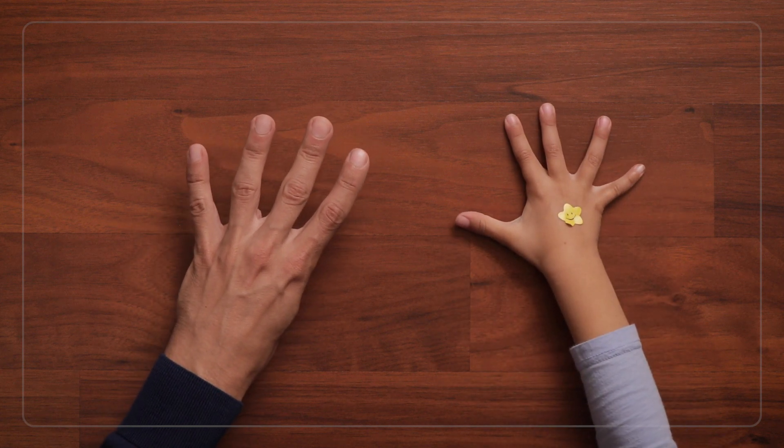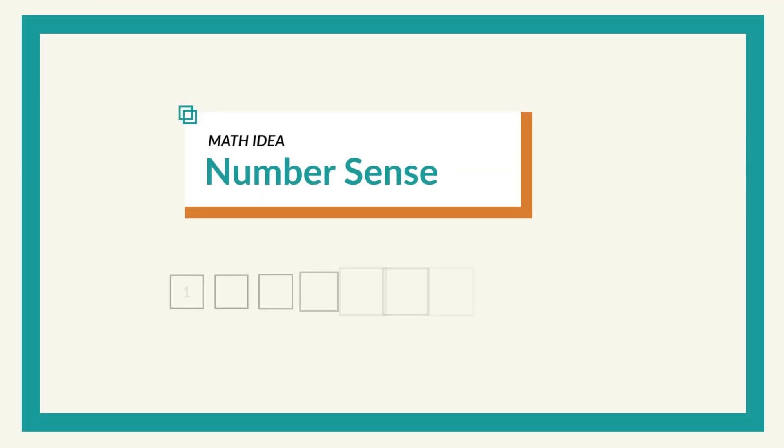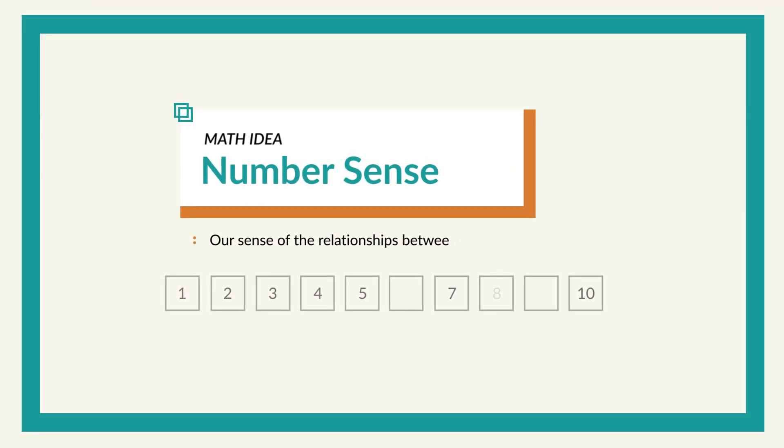But this concept of 1 more and 1 less is really important for kids' number sense, because they're beginning to recognize which numbers come before and after, knowing that 3 is before 4 and 5 is after 4.